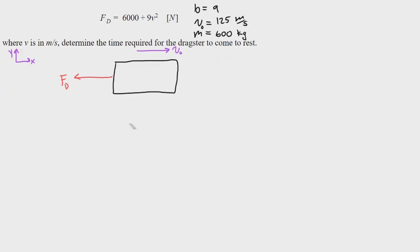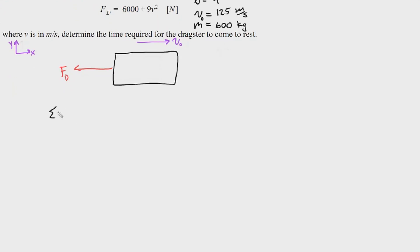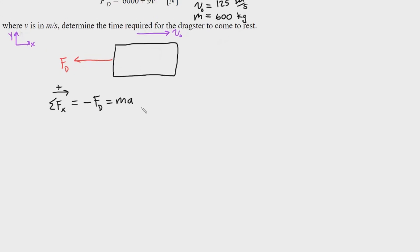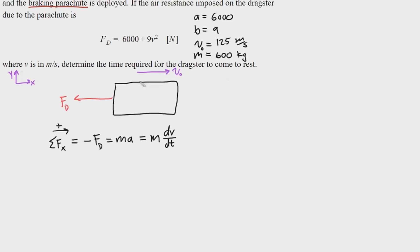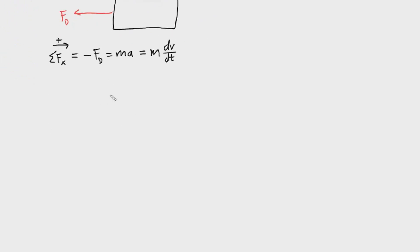With the free body diagram complete, we write the force equation. The sum of forces in the x direction equals negative Fd, and since this is a dynamics problem we set that equal to ma, because the dragster is decelerating. We then rewrite acceleration a as the derivative of velocity with respect to time, dv/dt, expressing this as a differential equation.